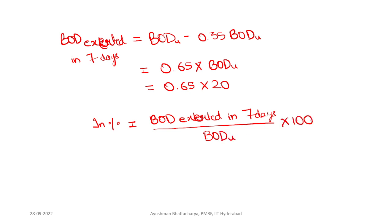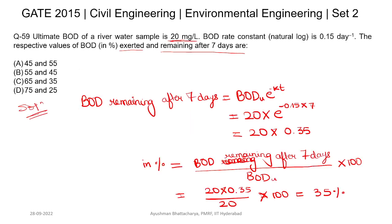This equals (0.65 × 20) / 20 × 100, which equals 65%. Therefore, BOD exerted in 7 days is 65% and BOD remaining is 35%. Option C is correct.